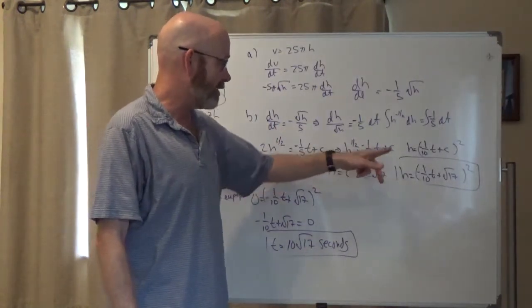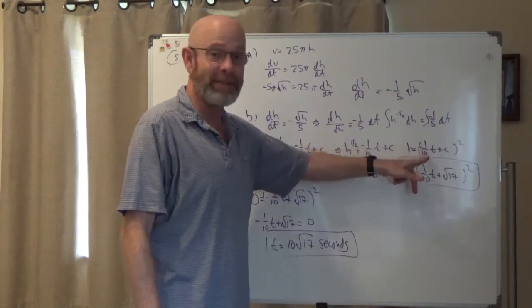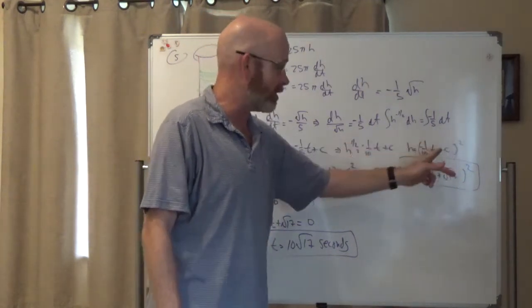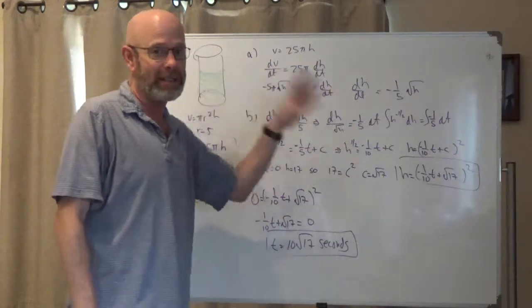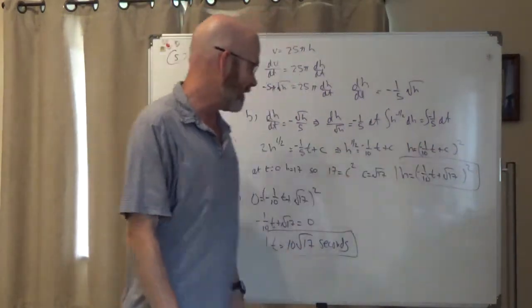So then I squared both sides. So I got h equals negative one-tenth t plus c squared. Notice the plus c is not at the end. If you wait till the end to put that plus c in, it's not going to work. Now I've got to find c.